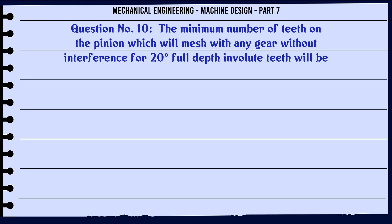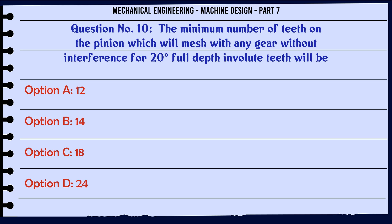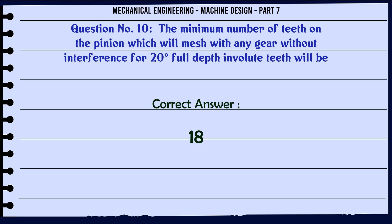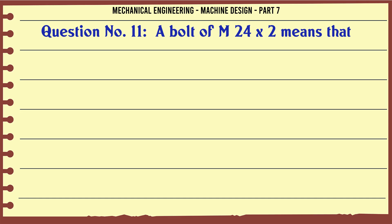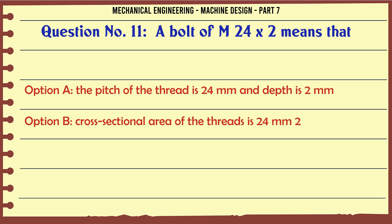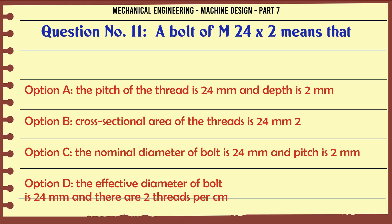The minimum number of teeth on the pinion which will mesh with any gear without interference for 20° full depth involute teeth will be: a) 12, b) 14, c) 18, d) 24. The correct answer is 18.